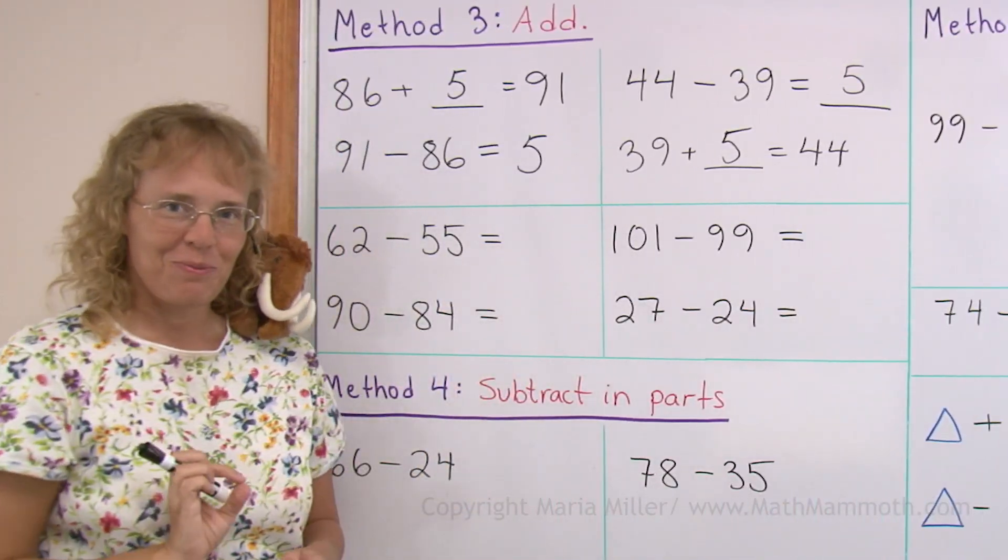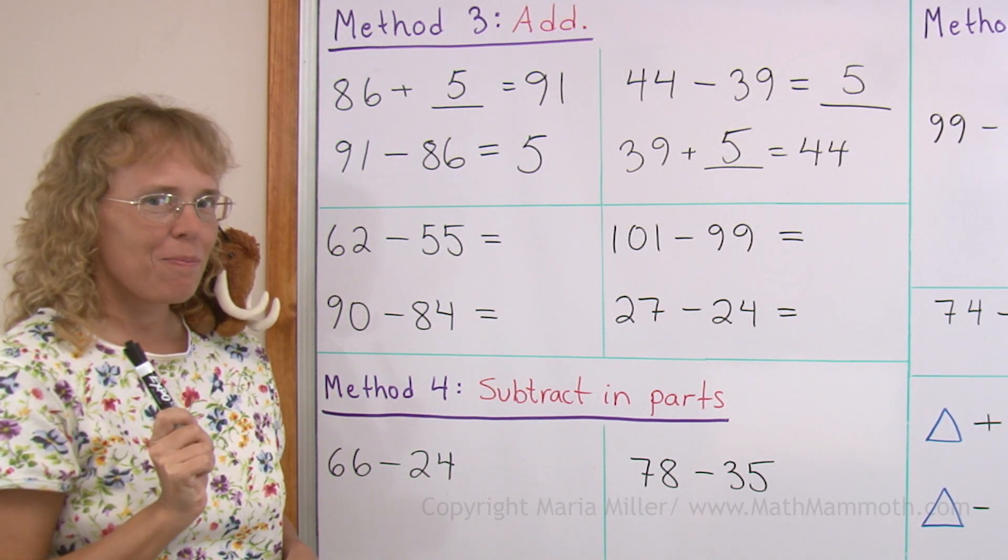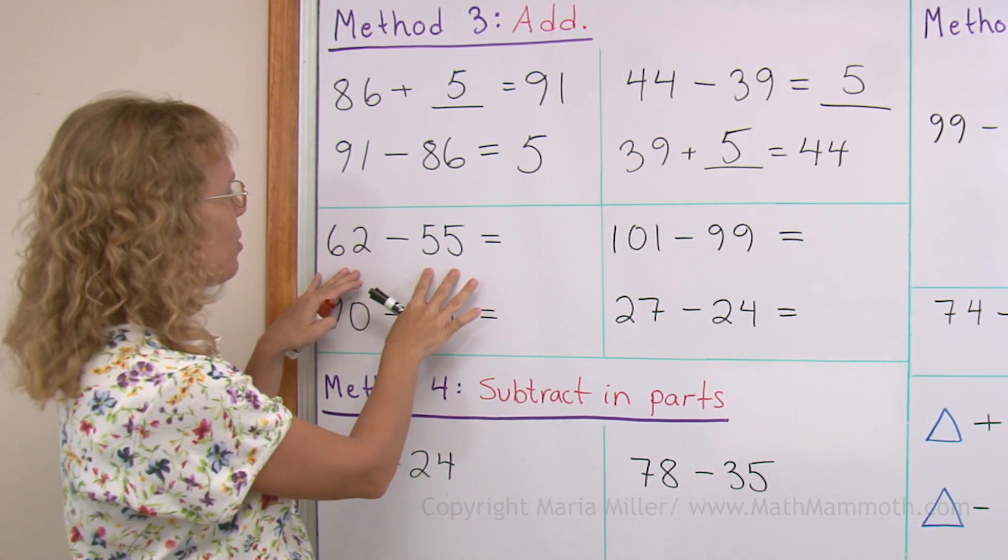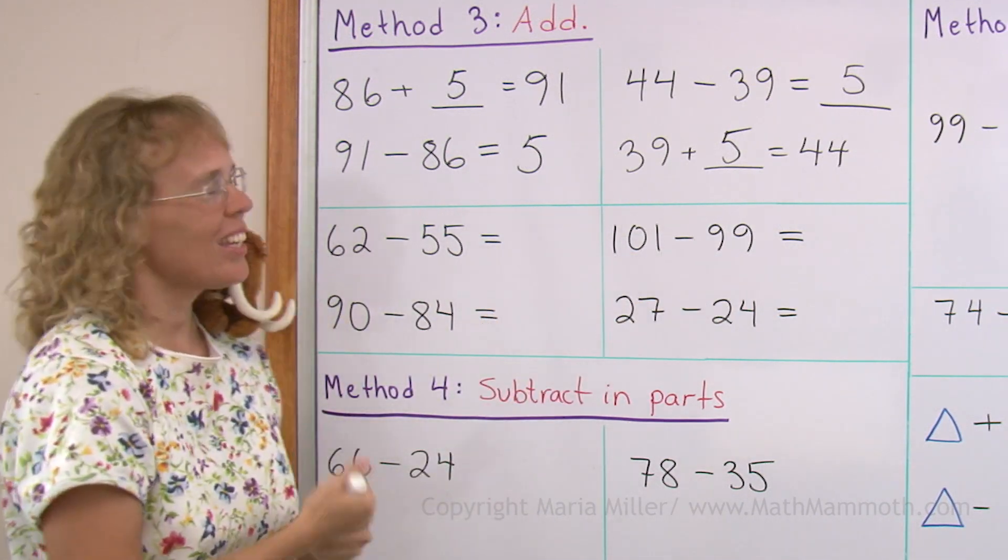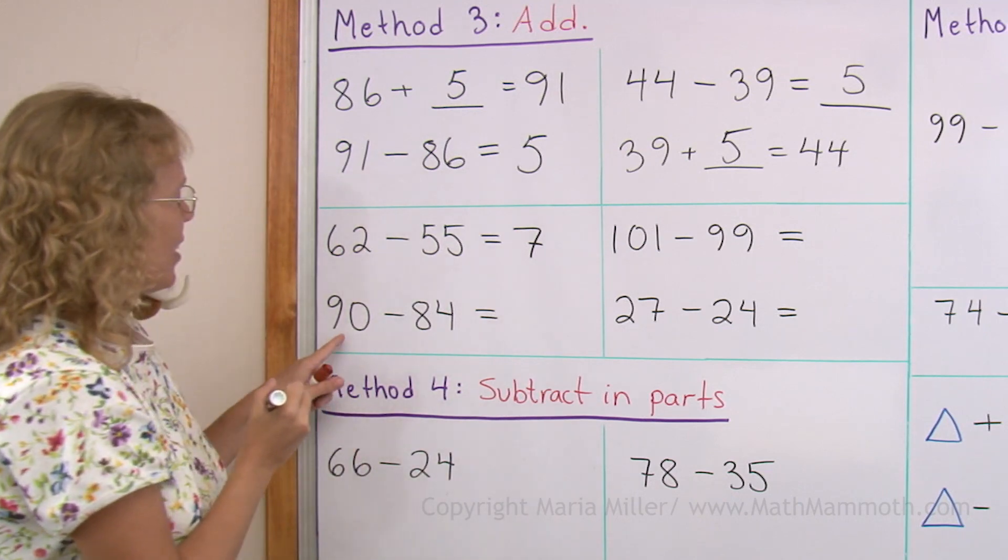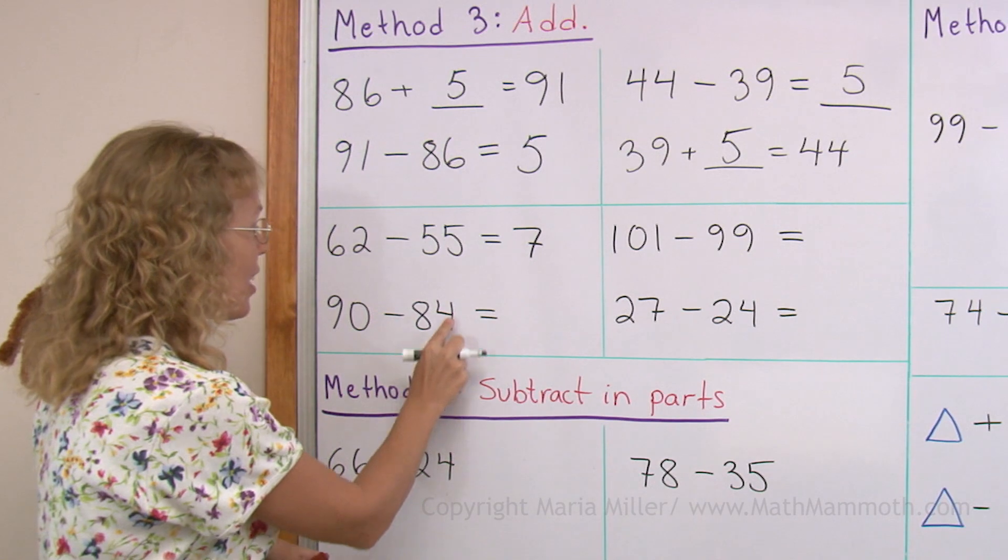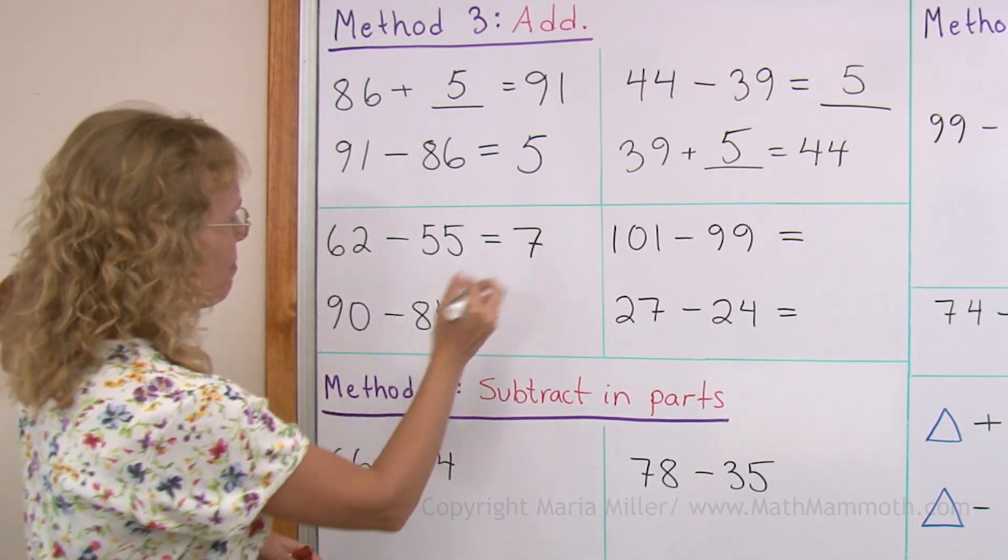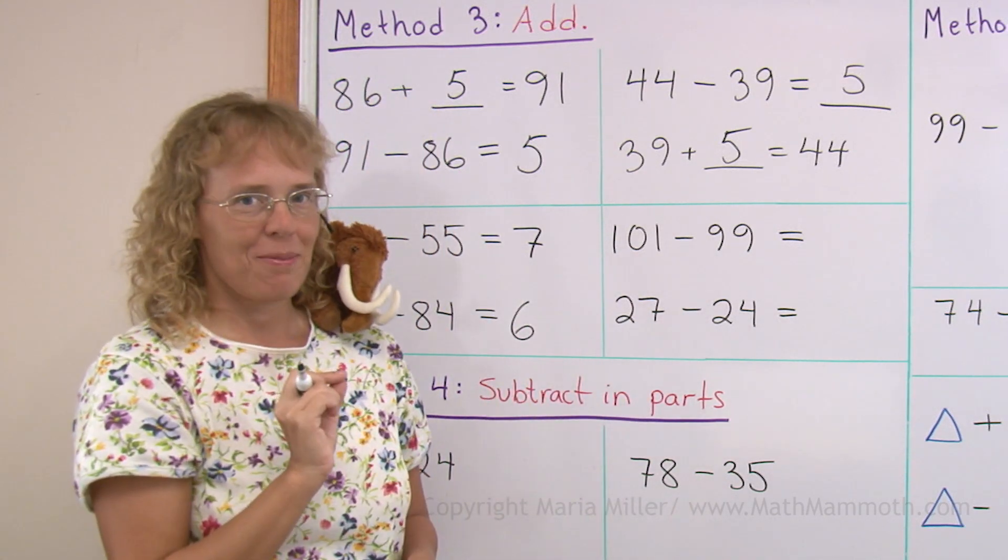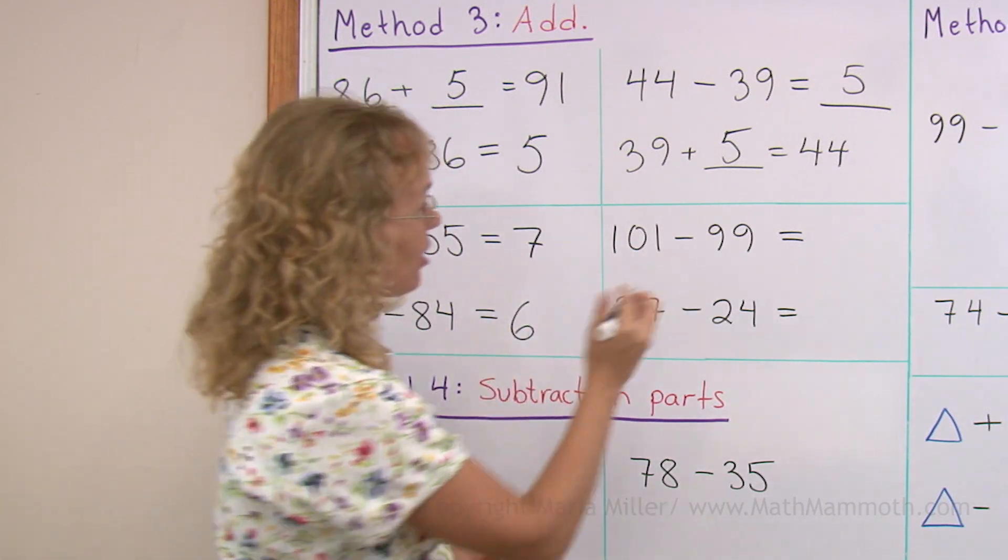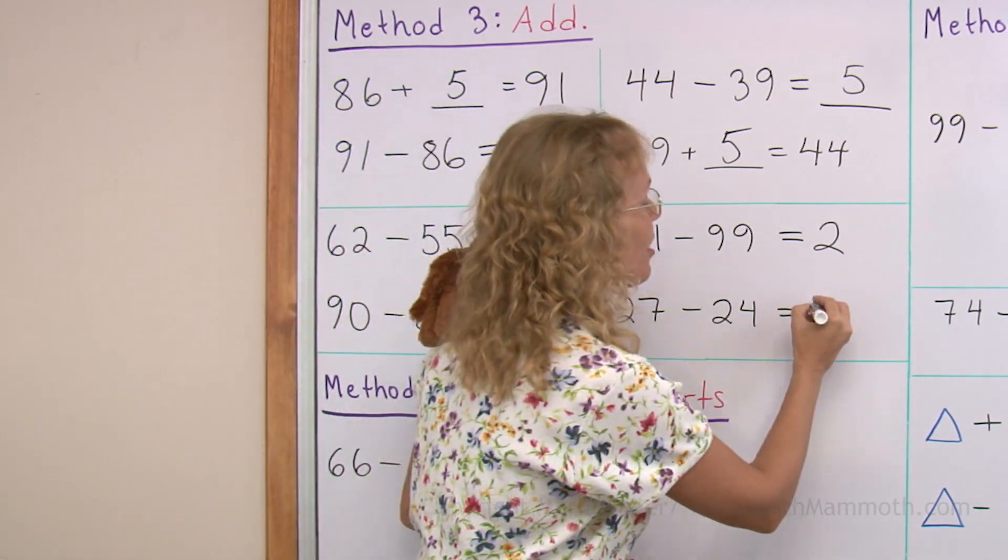Try this on your own. 62 minus 55. Think of the difference between these two or think of being at 55 and jumping to 62. The answer is 7, right? 90 minus 84. Or 84 plus how many more takes you back to 90? It is 6. 101 minus 99. The answer is 2. And then the last one. The answer is 3, right?